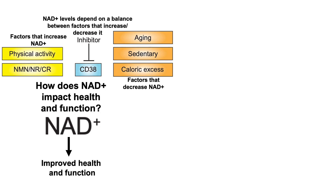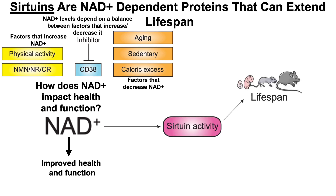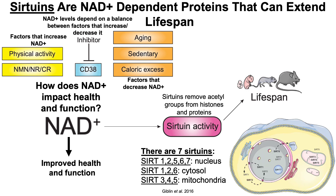How does NAD impact health and function? One mechanism involves sirtuins. Sirtuins are NAD-dependent proteins that can extend lifespan. More specifically, sirtuins remove acetyl groups from histones and proteins, and there are seven sirtuins as shown in this picture of the cell.